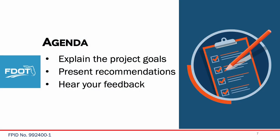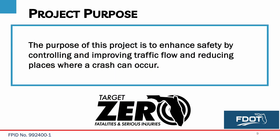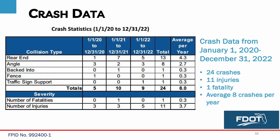The purpose of tonight's meeting is to explain the project goals, present the department's recommended improvements to help achieve those goals, and hear from the community about the proposed changes. This project is located in Lake County, at the intersection of Lake Park Court and U.S. 441, also known as State Road 44 and State Road 500. The Financial Project Identification Number, or FPID, for this project is 992400-1. The purpose of this project is to enhance safety by controlling and improving traffic flow and reducing places where a crash can occur.